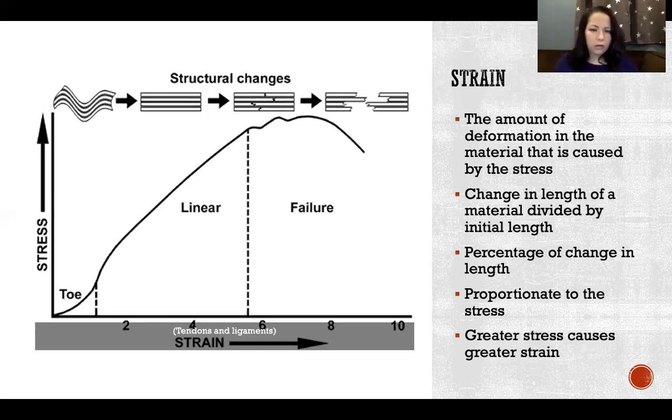As the stress increases on that tendon or ligament, and we can see the visual representation of that up at the top, we're seeing more and more strain of that tendon or ligament as the stress increases. This continues until we get to the top of the curve, and that's where we start to have damage to that tendon or ligament because there's such a great enough stress that the structure or the tissue can no longer withstand it.